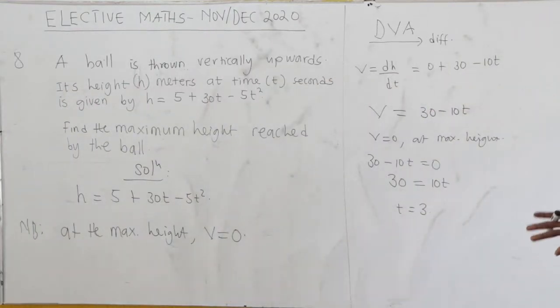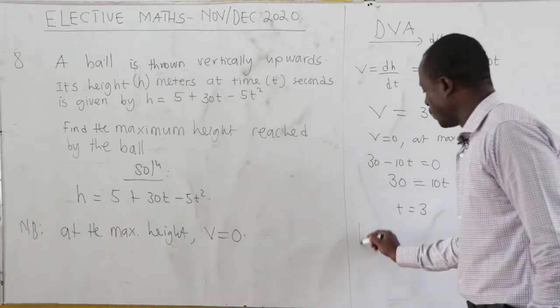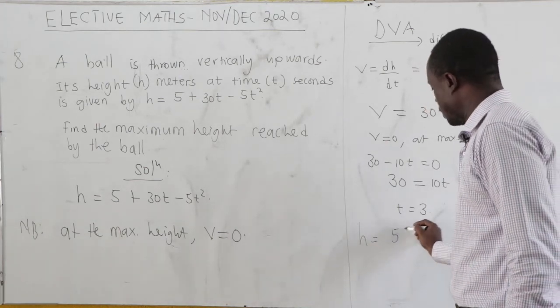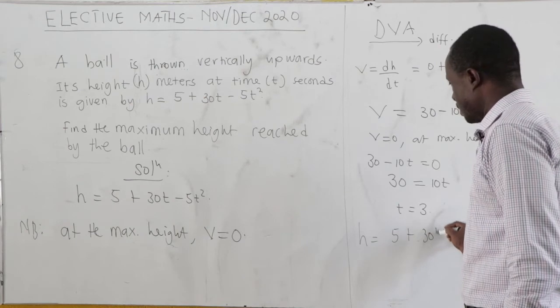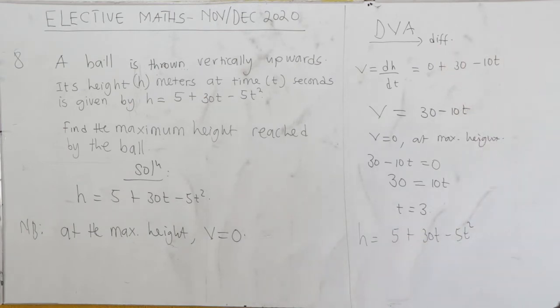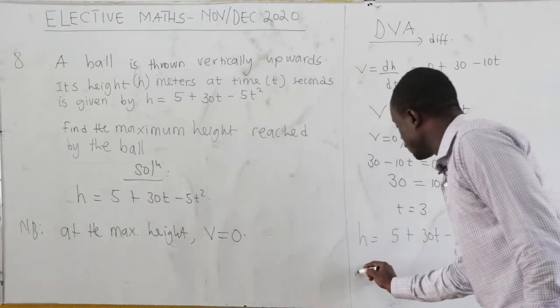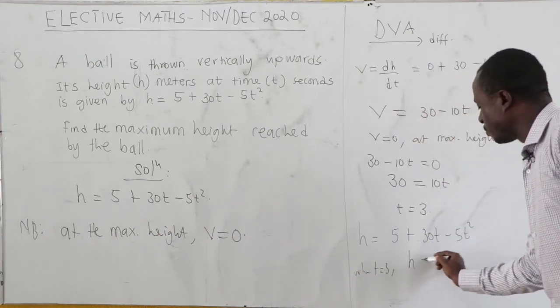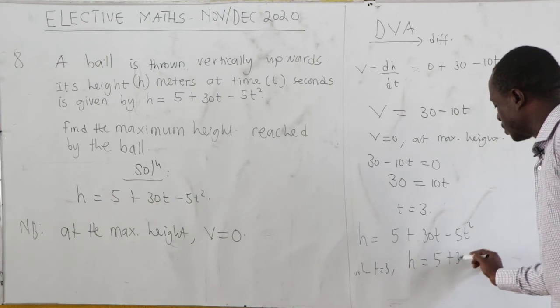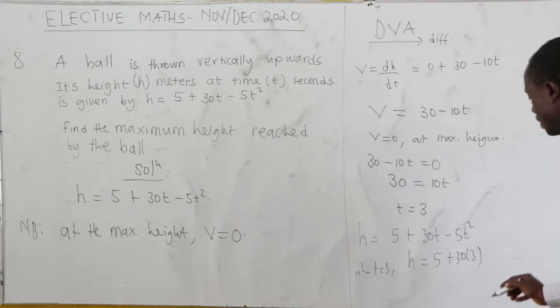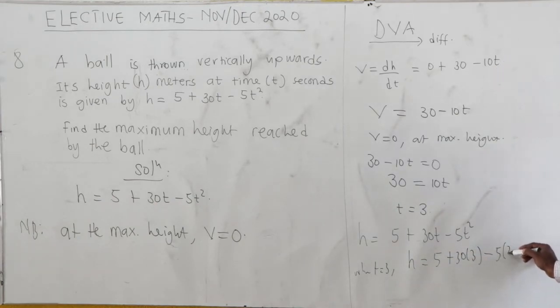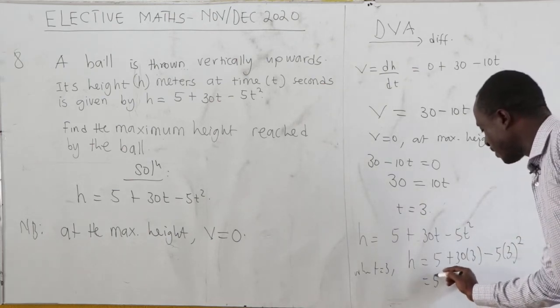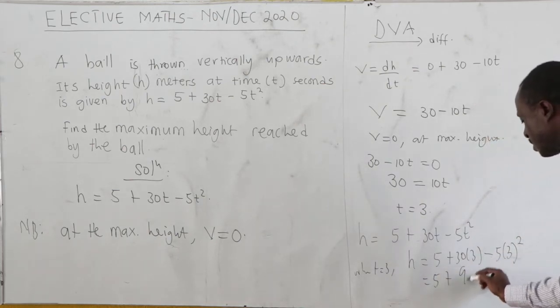Now we want the maximum height. We know h = 5 + 30t - 5t². When t = 3, we substitute: h = 5 + 30(3) - 5(3²). This gives us 5 + 90 - 45.